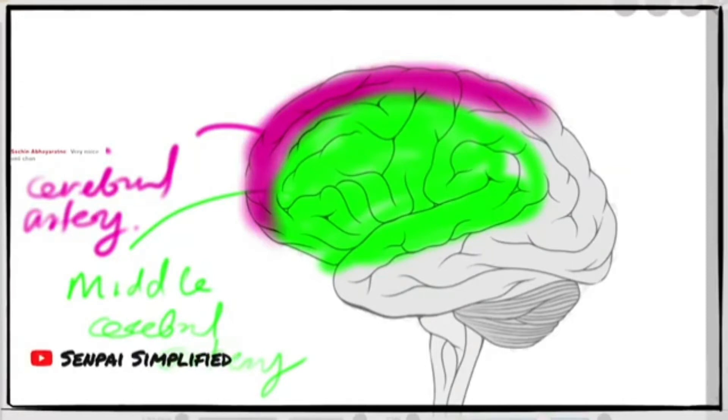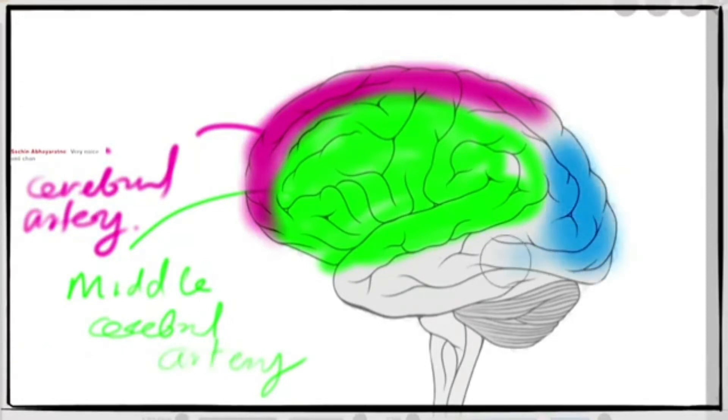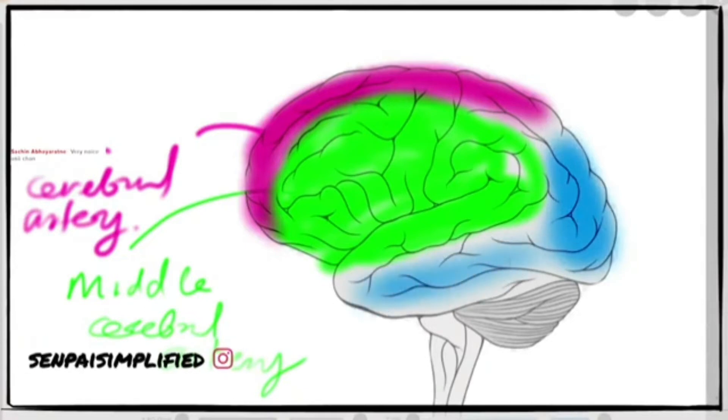The posterior cerebral artery obviously supplies the posterior surface of the brain and a part of the inferior surface of the temporal lobe.